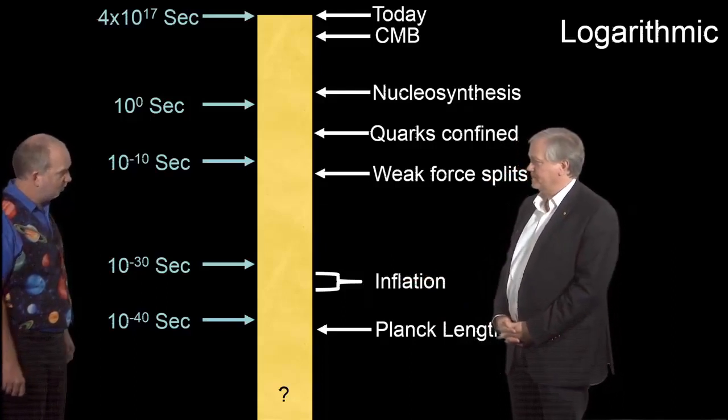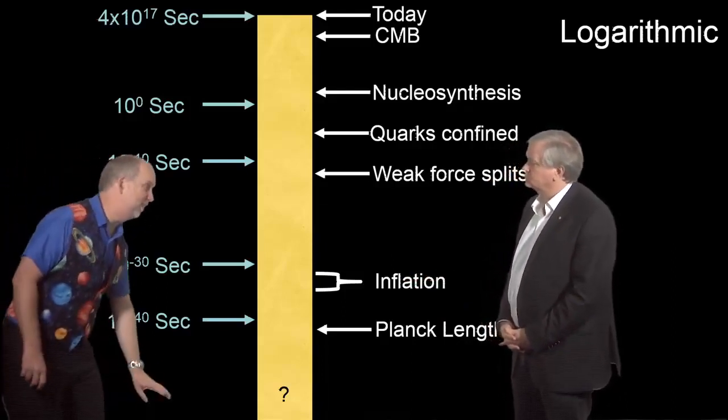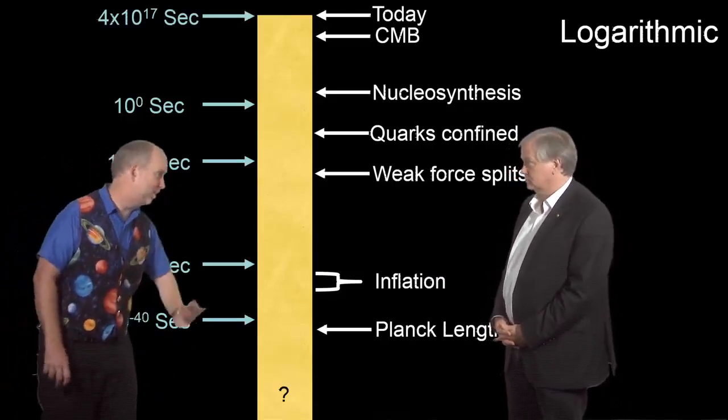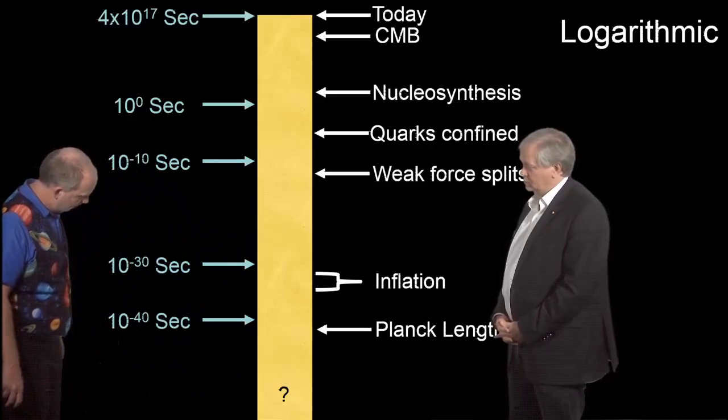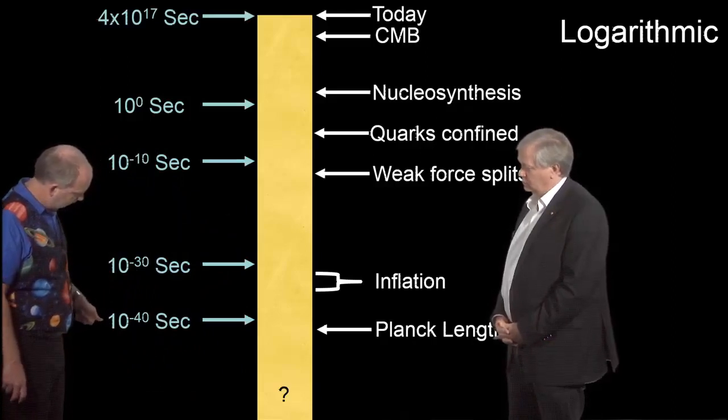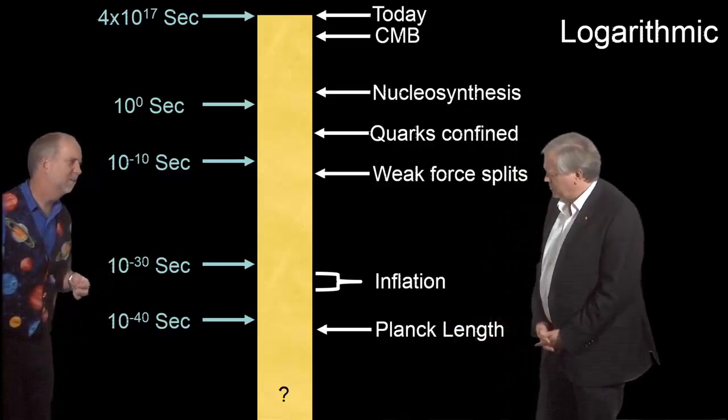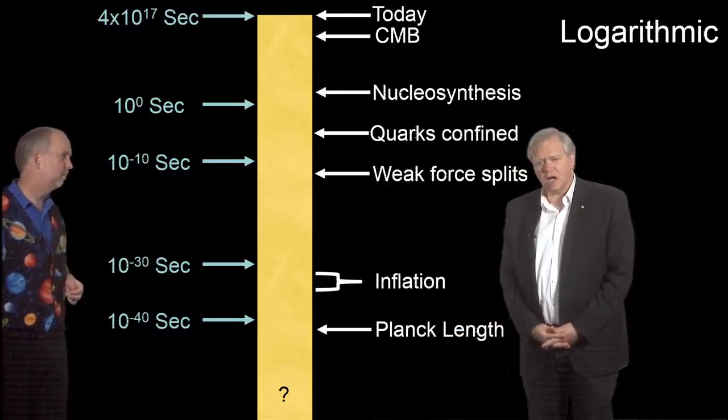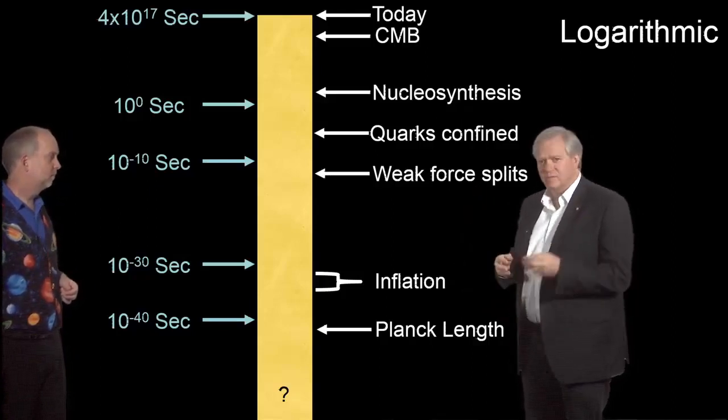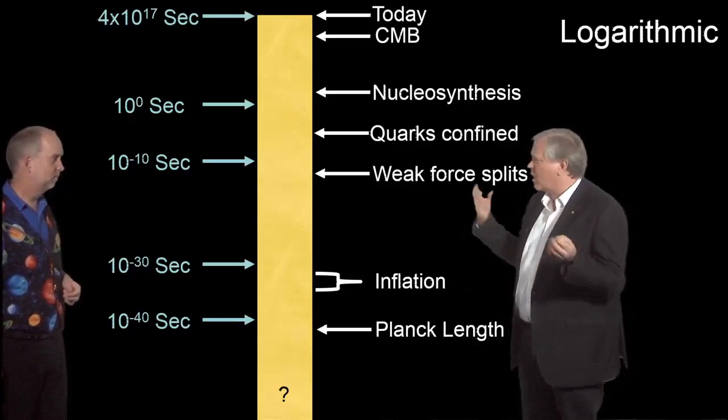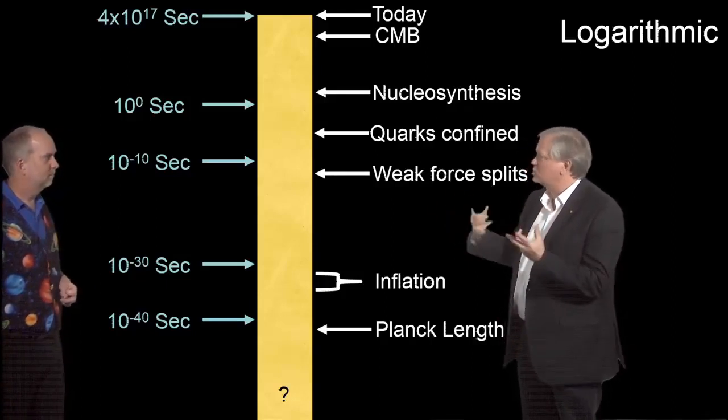Then we can go further back still, because of course on a log scale you get 10 to the minus 40, 10 to the minus 50, 10 to the minus 60, 10 to the minus 100, 10 to the minus 1,000, 10 to the minus a million - it just keeps going off the bottom of the screen infinitely far. But we've kind of got a limit here: 10 to the minus 40, which is called the Planck length.